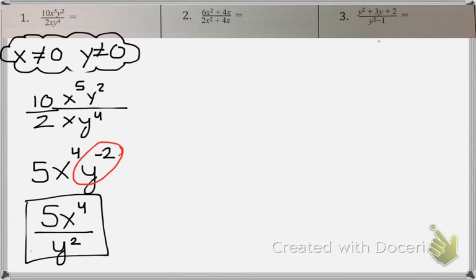For number 2, right now it's hard to tell what all of our restrictions will be for x. So what I want to do first is factor it. For my numerator, I have a GCF that is 2x. In my denominator, I also have a GCF that is 2x. So I'm going to factor both of those out.